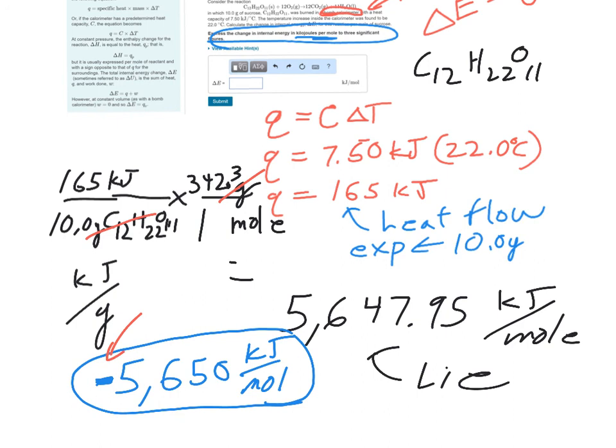We were heating the water and the water is actually the surroundings. We were heating our calorimeter and our calorimeter is the surroundings, so that means our system lost. Because where did the energy come from that heated up our calorimeter? It came from inside our system so our system lost, so it's going to be a negative 5,650.